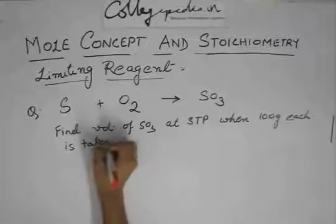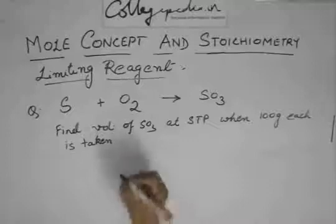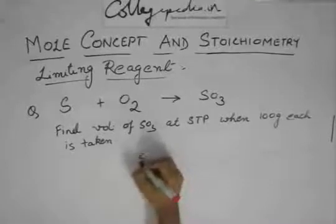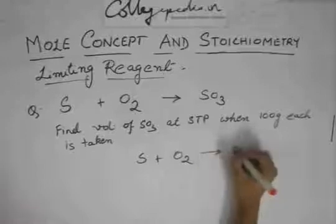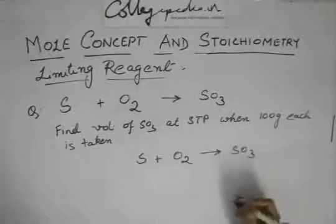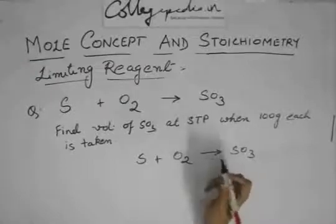100 gram each means 100 gram sulfur and 100 gram oxygen. First you have to balance the reaction because without that you cannot proceed. Balance it by heat and trial, no need for POAC and stuff.